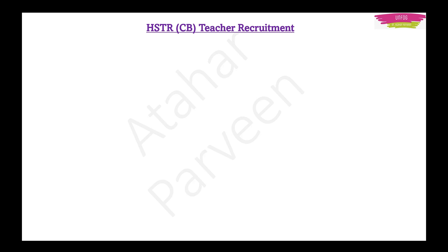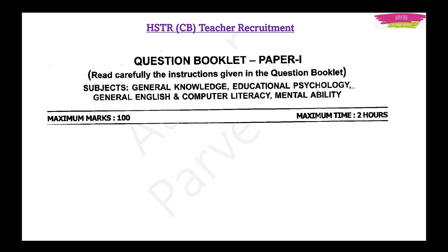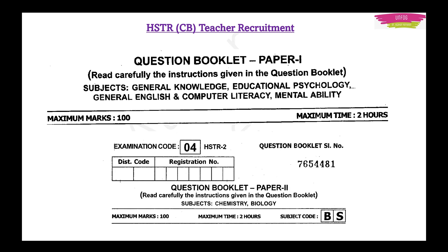In Paper 1, the syllabus will cover general knowledge, educational psychology, general English, computer literacy, and mental ability. This exam will be for two hours with a maximum of 100 marks. In Paper 2, if you are a CB method aspirant, your specific subjects will be chemistry and biology; if you are a PM method aspirant, it will be physics and mathematics. There will be no negative marking, and all questions will be objective type multiple choice questions.